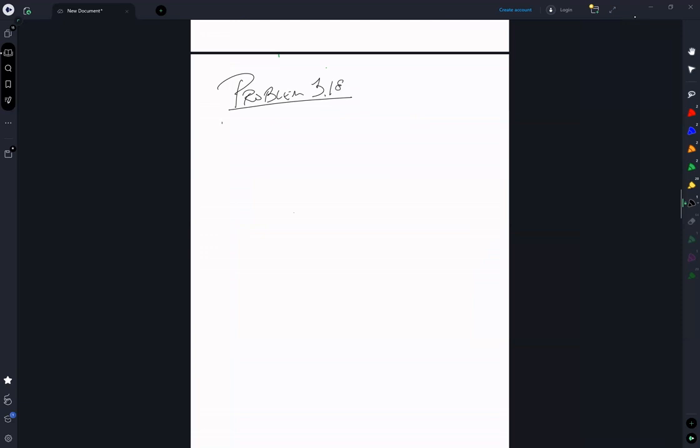You're given that indium has a tetragonal unit cell with A equals 0.459 nanometer and C is equal to 0.495 nanometer.